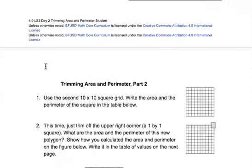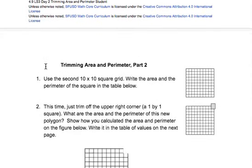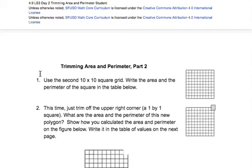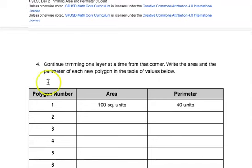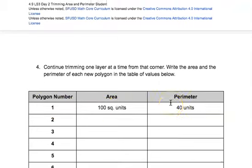Okay, here's part two. You're going to use your second 10 by 10 square grid. Write the area and the perimeter in the table below. So right here for your second one, it's 100 square units and the perimeter is 40.